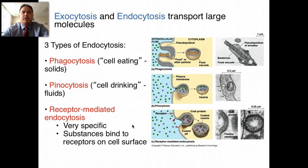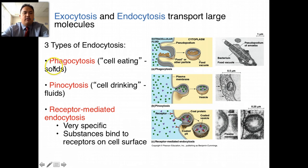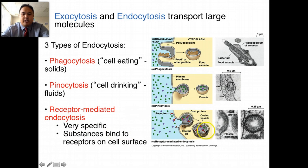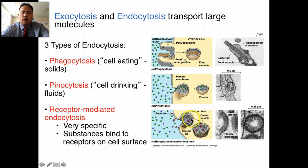Mr. Xu also talked about exocytosis and endocytosis — the transport of large molecules. There's phagocytosis, which is cell eating, and pinocytosis, which is cell drinking. We also talked about receptor-mediated endocytosis, which is very specific — only certain things are allowed into the cell through a specific vesicle.